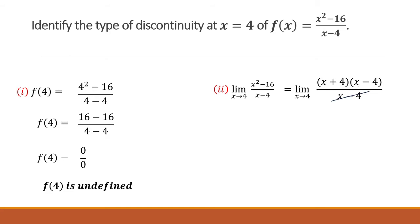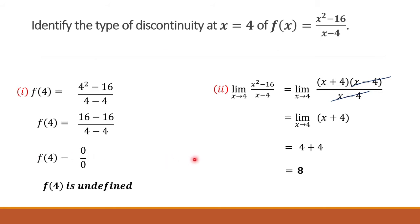After factoring, the common factor is cancelled, giving us the limit of x plus 4 as x approaches 4. By direct substitution, we have 4 plus 4, which equals 8. The limit exists and equals 8, and it is not equal to f. Therefore, the type of discontinuity is removable or hole.